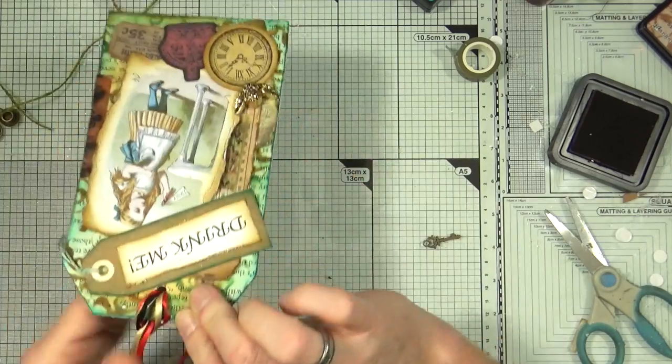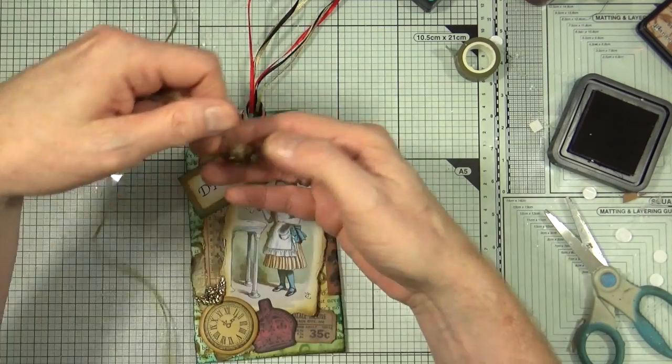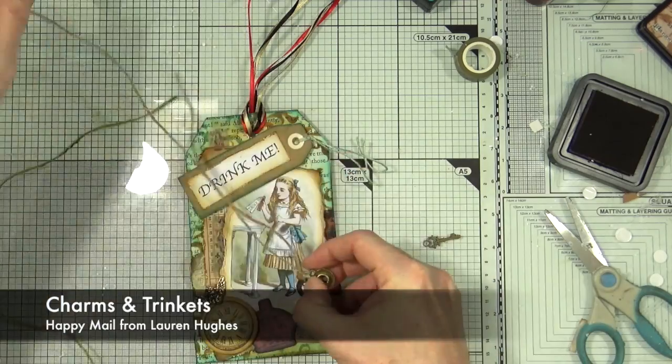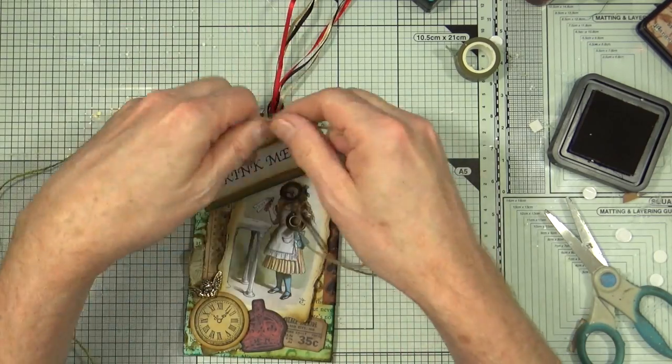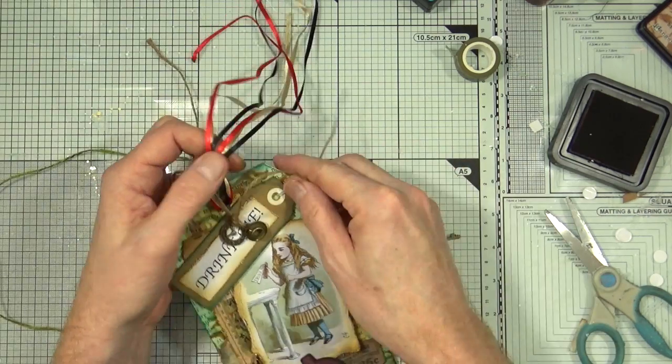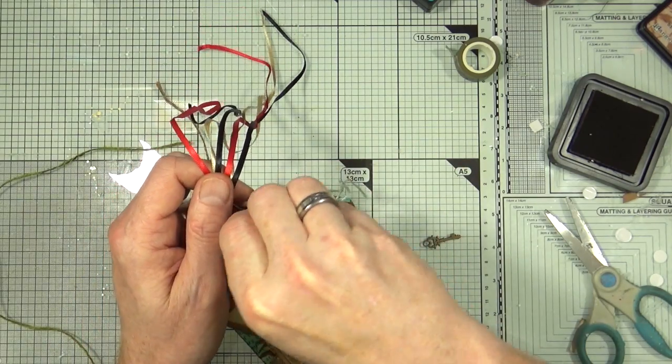The charms that I'm going to be adding are a small clock to signify the white rabbit, there's a teacup and saucer for the Mad Hatter, and there is also a little key that I'm going to add to the drink me tag later on, which is the key that was on the other tag that she used to get out of Wonderland.